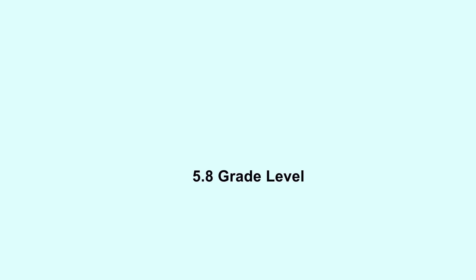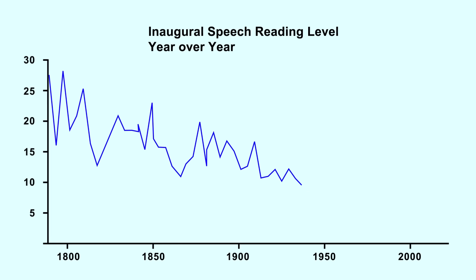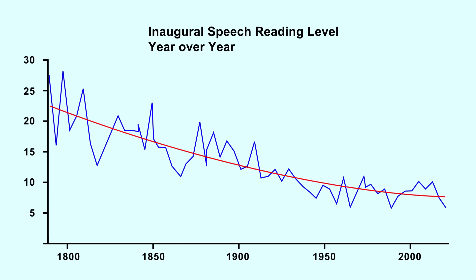By contrast, Joe Biden's inaugural speech in 2021 is scored at the 5th grade reading level. Wow, that's a huge difference. If we plot the reading level of every inaugural speech, we get a clear picture of how presidential speeches have changed over time. And if we plot the trend line, we can definitely see a decrease of reading level over time.